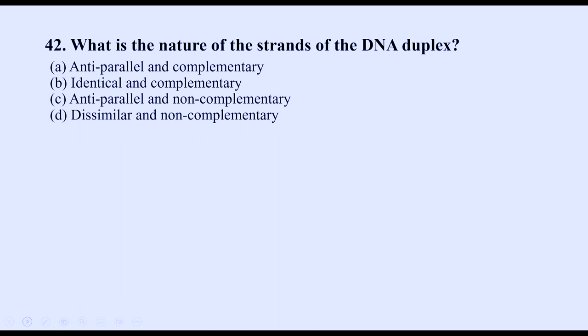What is the nature of the strands of the DNA duplex? Option A is antiparallel and complementary — complementary means if A is present, it pairs with T; if G is present, it pairs with C. Option B (identical and complementary) is wrong — both strands are not identical. Option C (antiparallel and not complementary) is wrong — it is complementary. Option D (dissimilar and non-complementary) is wrong. The correct option is A, antiparallel and complementary.